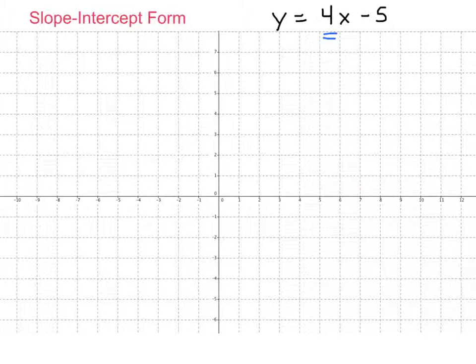The number here by the x is the slope, and the number here all by itself is the y-intercept. You can see our y-intercept is negative 5, and that tells us we need to put a big old dot on negative 5. And since the slope is 4, we treat that as 4 over 1. And from that starting point, we're going to go up 4 and over 1, and we'll make our second dot.